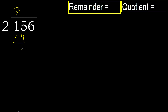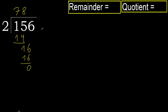Subtract, next: 16. 2 multiplied by 9 is greater. Multiply by 8: 16 is not greater. Subtract 0, next.